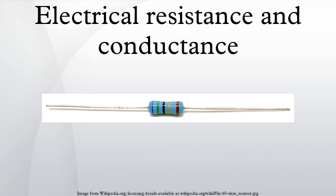At commercial power frequency, these effects are significant for large conductors carrying large currents, such as busbars in an electrical substation, or large power cables carrying more than a few hundred amperes. What determines resistivity? The resistivity of different materials varies by an enormous amount — for example, the conductivity of teflon is about 10³⁰ times lower than the conductivity of copper.